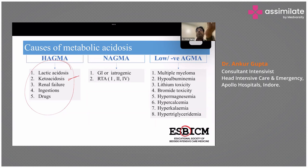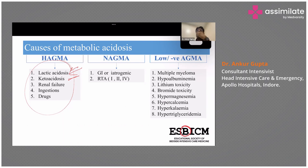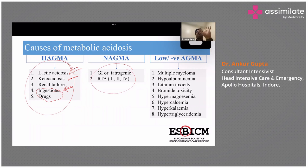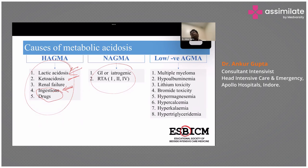Major causes of high anion gap: ketoacidosis — diabetic, alcoholic, or starvation ketoacidosis — most common. Lactic acidosis, very common: first cause is hypoperfusion and shock; second is liver failure where the liver is not detoxifying lactates. Then renal failure where acid cannot be secreted, and poisons and drugs causing different types of acidosis. For normal anion gap (NAGMA): either a GI cause — patient losing bicarbs in diarrhea, fistula drains, or abdominal tubings — or renal cause such as renal tubular acidosis where kidneys cannot absorb bicarbs and lose them in urine.